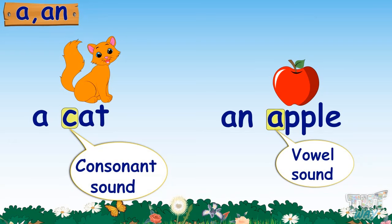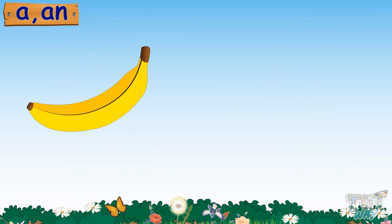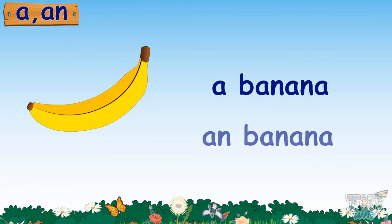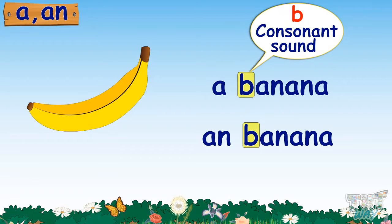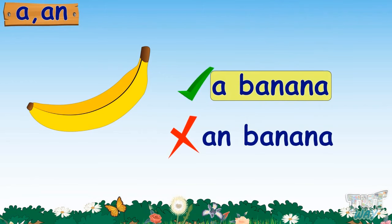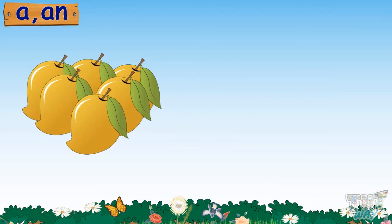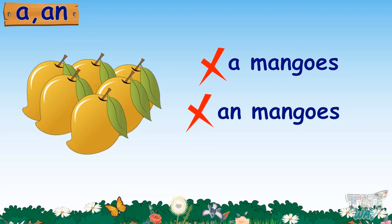Now let's learn more examples. What is this? This is a banana. Why 'a banana' and not 'an banana'? Because banana starts with a consonant sound — the sound of letter B — so we will use 'a' before it. What do you see in this picture? These are mangoes. We will not use 'a' or 'an' because the naming word is not singular; there are more than one mango. So we will neither use 'a' nor 'an'. Instead, we will say: these are mangoes.